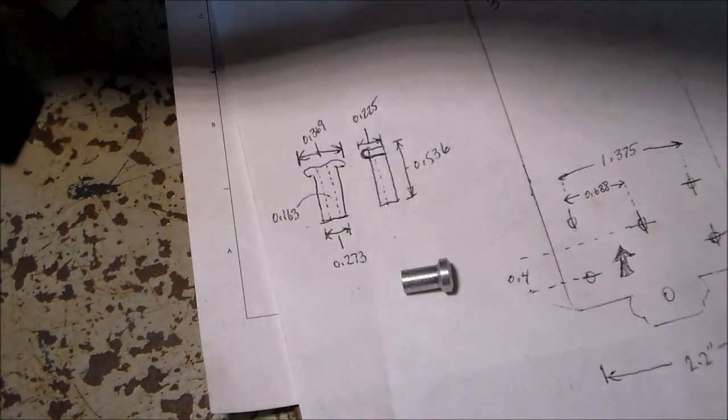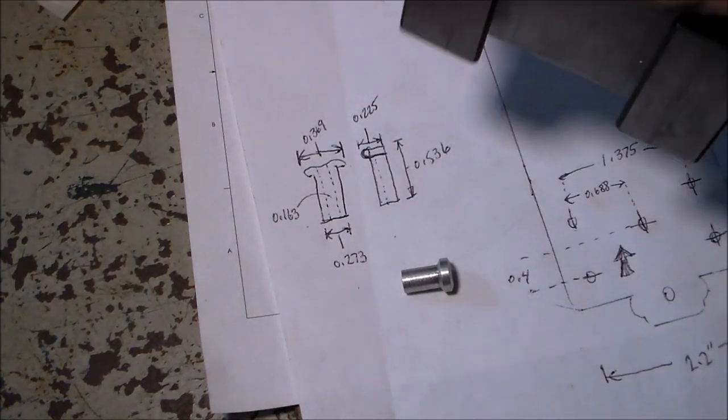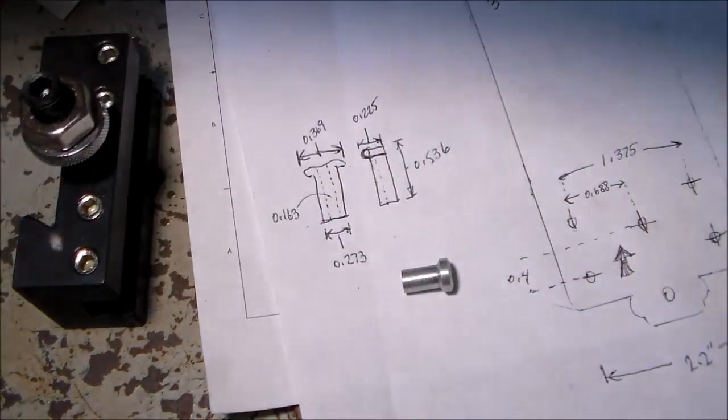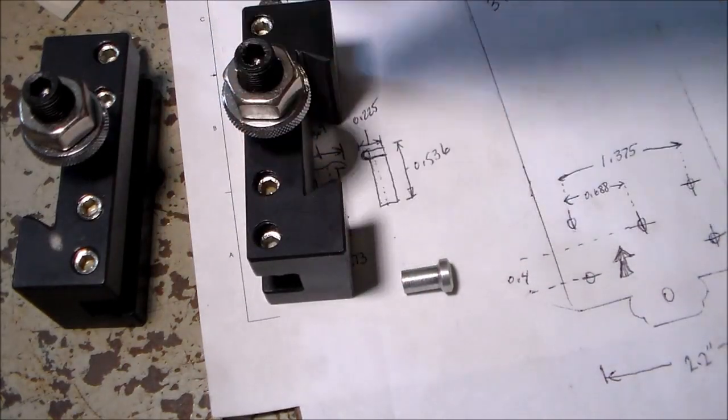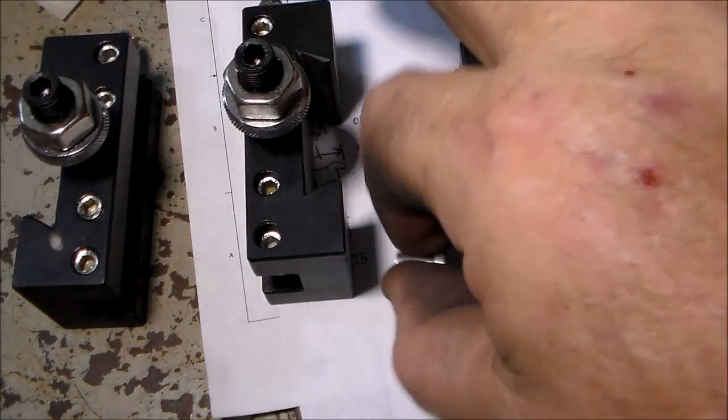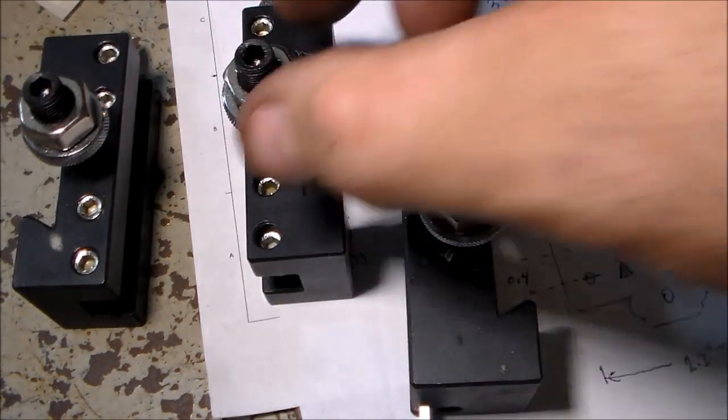I also have a quick change tool post, which a lot of guys have already upgraded to. So I decided that this is going to basically be three operations. I've got my three tools I think I need for this operation. I got a parting or cutoff tool.